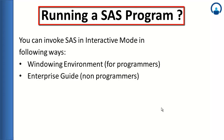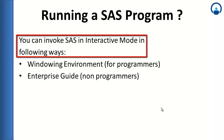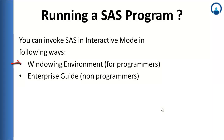Now let us move on to how to run a SAS program. You can invoke SAS in the interactive mode in one of the following two ways: one is the windowing environment, and second is the Enterprise Guide. The windowing environment is used primarily by SAS programmers, who write code line by line and execute it — it is best suited for a technical person. Enterprise Guide is specially designed by SAS for people who do not come from a technical background, and it is a point-and-click application that produces the same results.